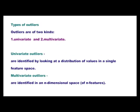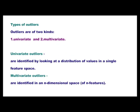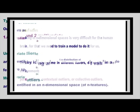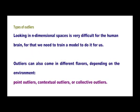There are different types of outliers. The first one is univariate and the second one is multivariate. Univariate outliers are identified by looking at a distribution of values in a single feature space, whereas multivariate, as the name suggests, are identified in an n-dimensional space. Looking in an n-dimensional space is very difficult for the human brain, so we need to train a model to do it for us.